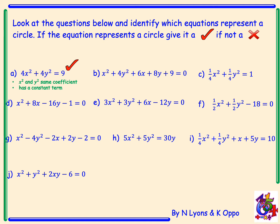Looking at b: x squared plus 4y squared plus 6x plus 8y plus 9 equals 0. Here x squared and y squared don't have the same coefficient, therefore this does not represent a circle.